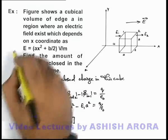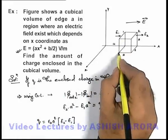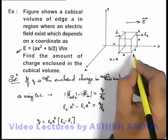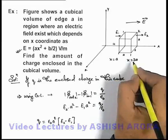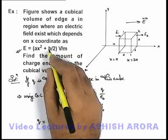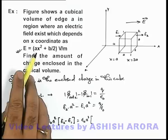These electric fields we can substitute by using this expression. For E1 the value of x coordinate is a, and for E2 the value of x coordinate will be 2a. If we substitute the values, it will be epsilon not a².